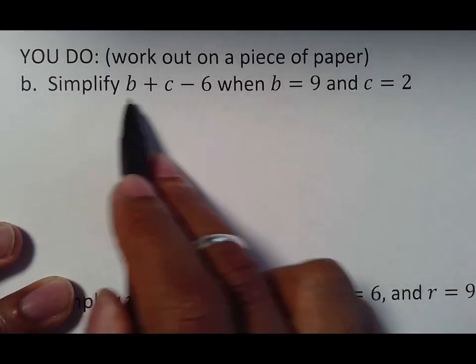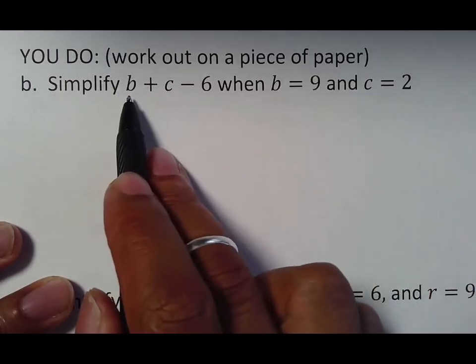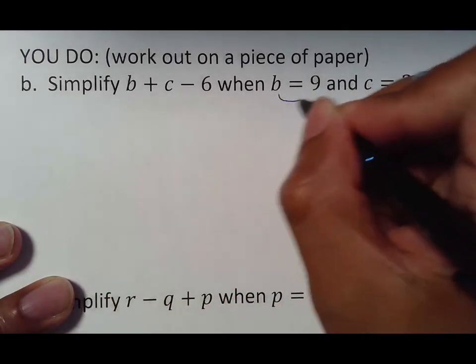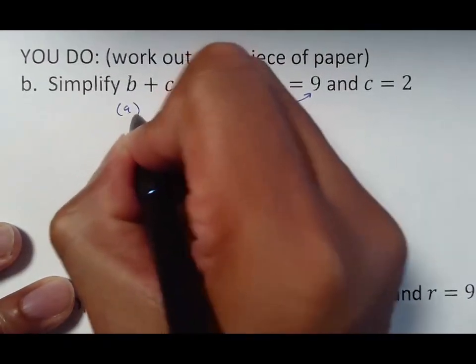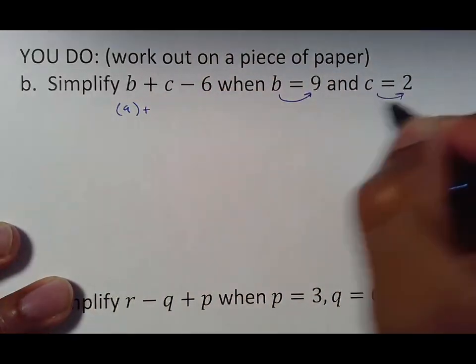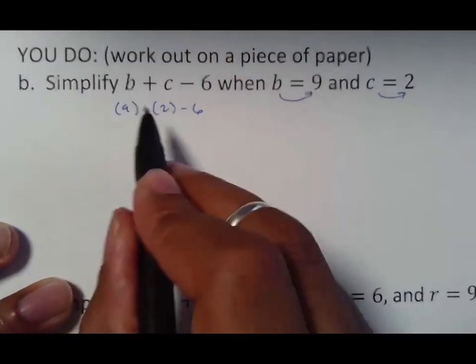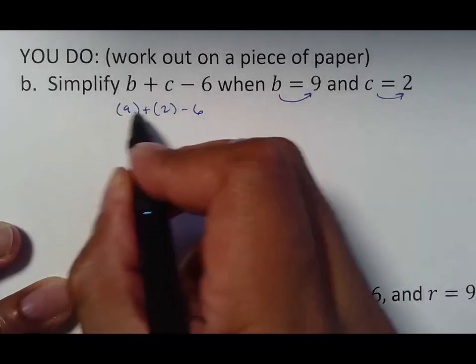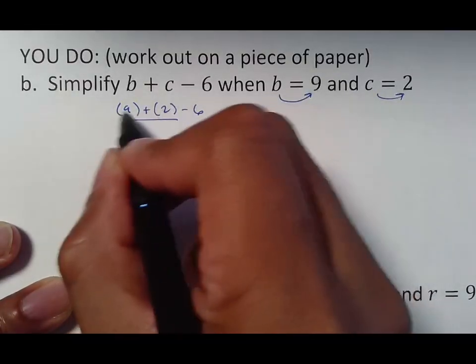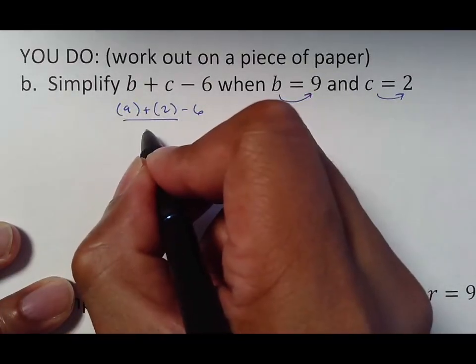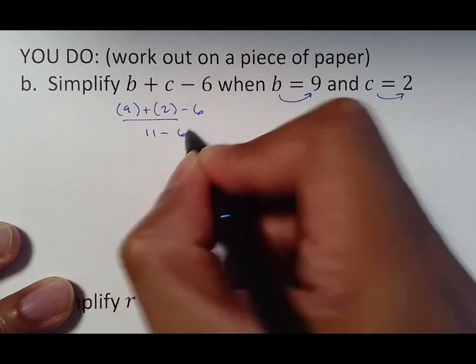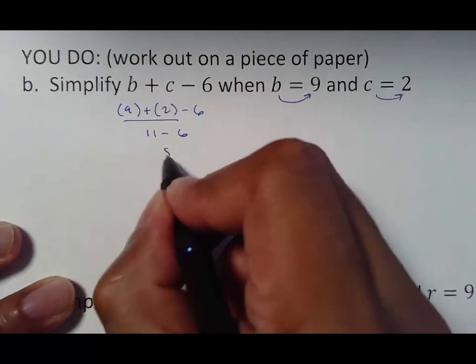B plus C minus six. Again, we can't work this out because of the variables, but what we can do is read this key, which tells us that B is nine. So put a nine in for B. C is two. So put a two in for C. This just says 9 plus 2 minus 6. It's not anything special about the parentheses. So we just work it out. 9 plus 2 is 11. Bring down your minus six. 11 minus 6 is 5.